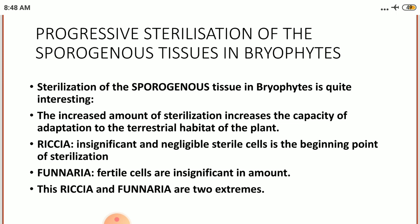In Funaria, which is the extreme member, the sterilization reaches its peak where the major portion of the capsule is much more complex and sterilized. The seta is well developed with well-defined internal differentiation in cell size. The capsule consists of several well-developed sterile regions such as operculum, peristome, apophysis, columella, capsule wall of chlorophyllous cells and epidermis with stomata.